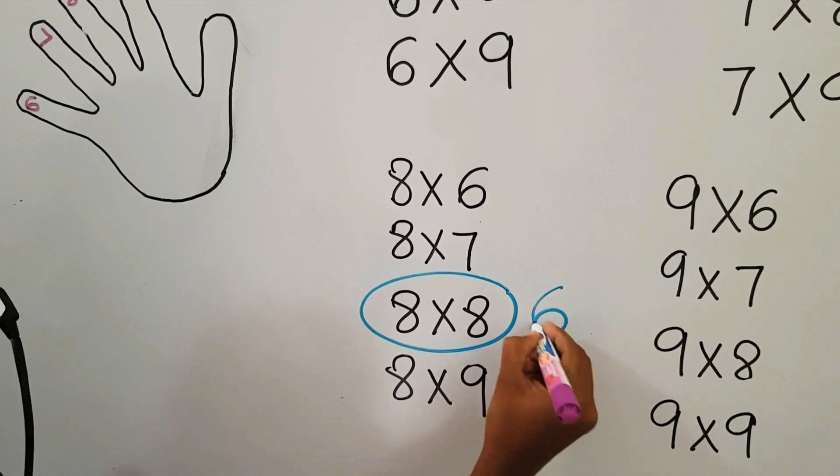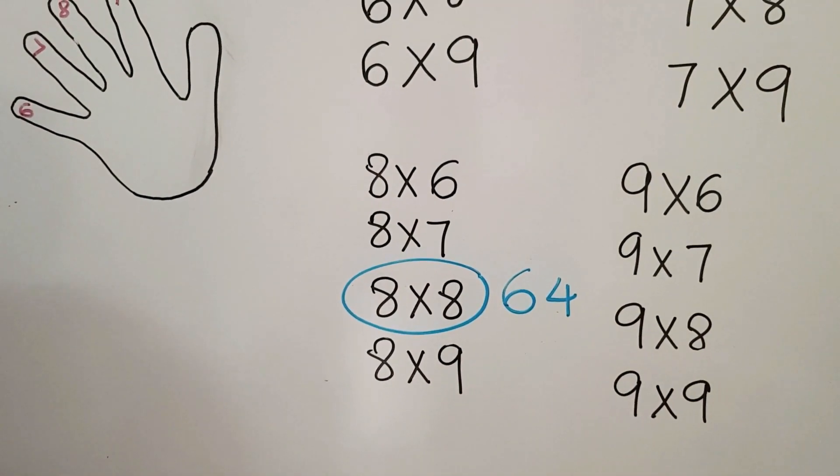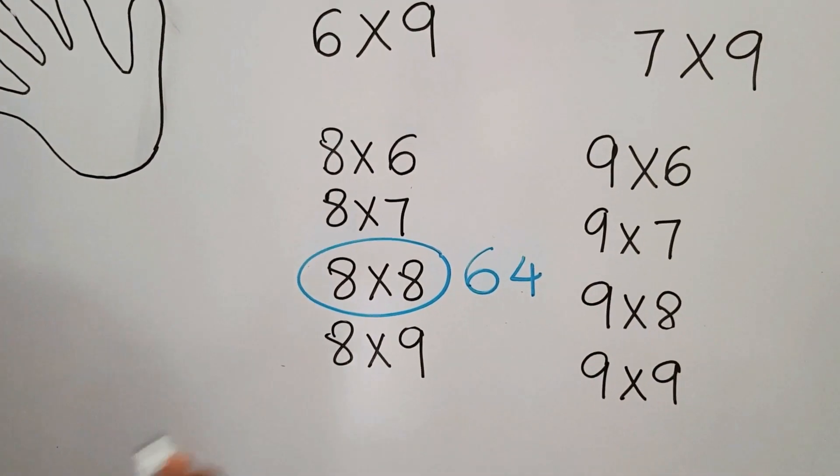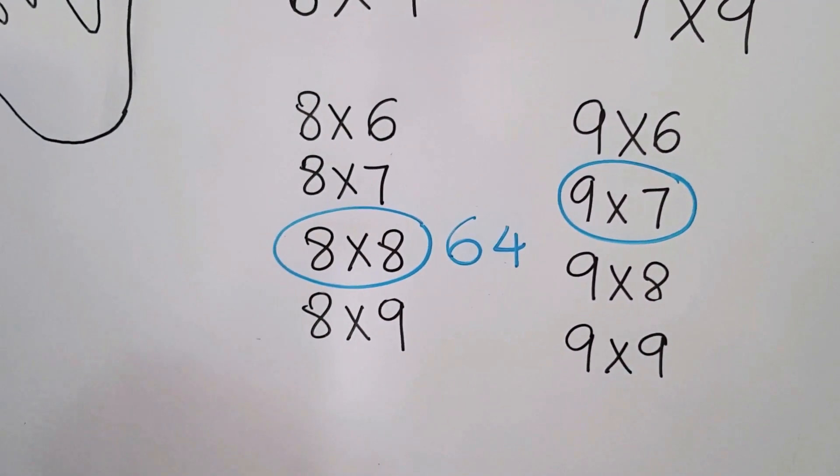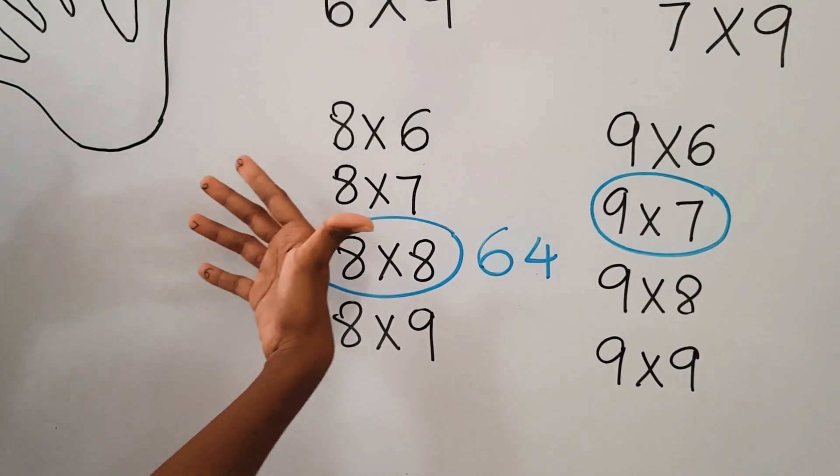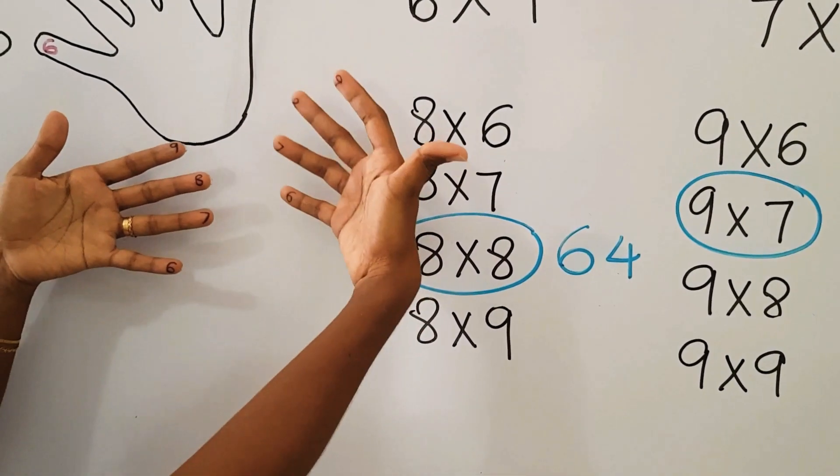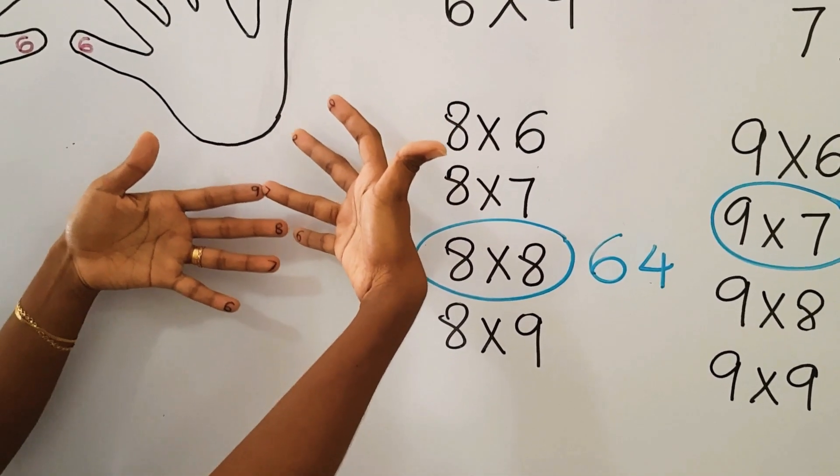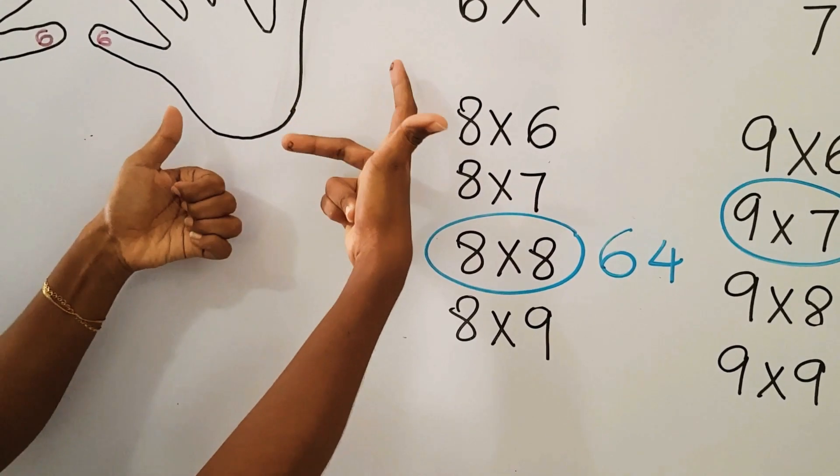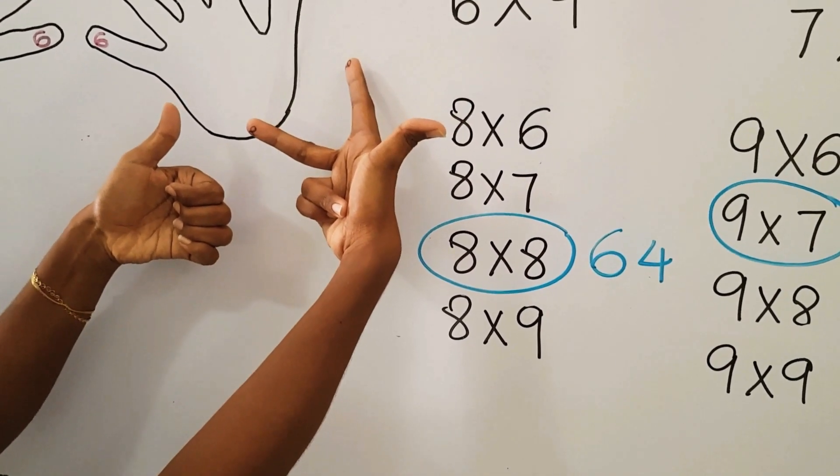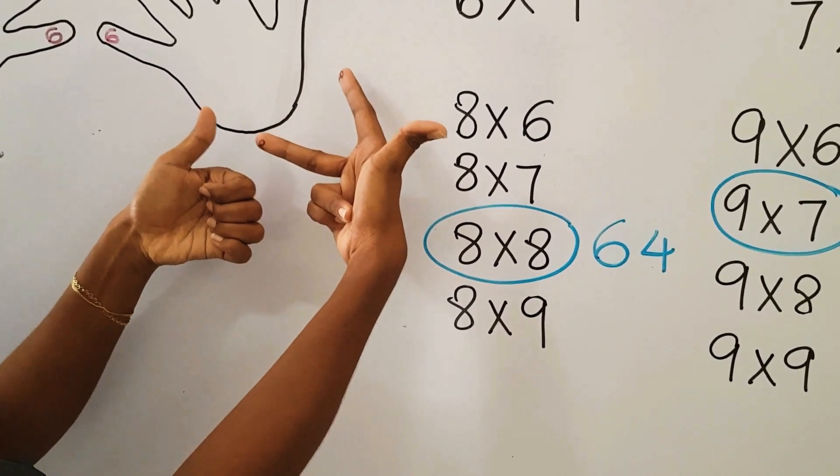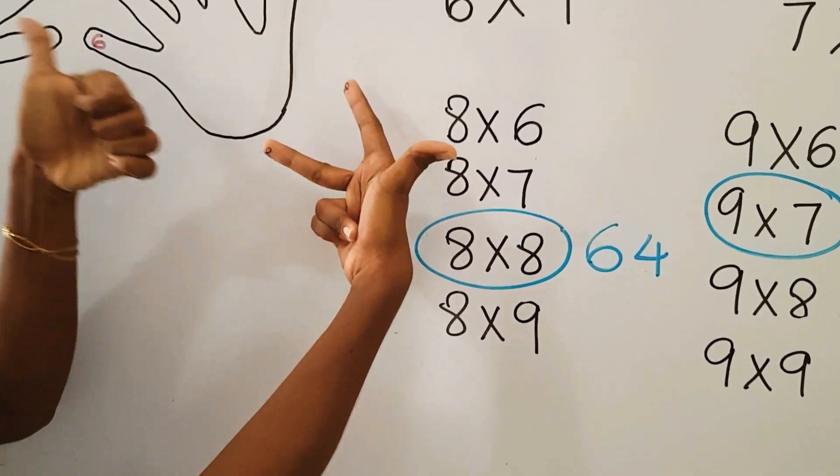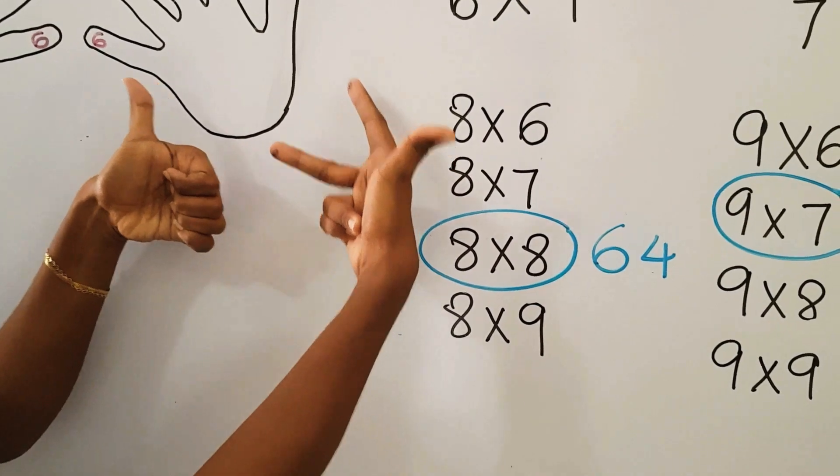Let's see another example: 9×7. When it is 9×7, how do we take it? 9 from the first hand and 7 from the other hand, and we fold all the fingers below that. So how many fingers have we folded? We have again folded 6 fingers which means 60, and one balance from this hand, three balance from the other hand.